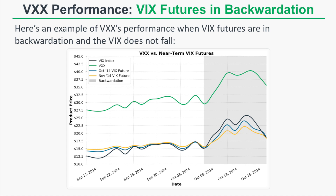So in this graph, we're looking at the October and November VIX futures, which at the time were the near-term VIX futures, and then we're comparing those price movements to the changes in VXX, and we can also see the VIX index. In the first portion of this graph, the VIX futures are actually in contango, but the VIX index is creeping higher and higher, and so are the near-term VIX futures. And as we can see, VXX's value is also creeping higher.